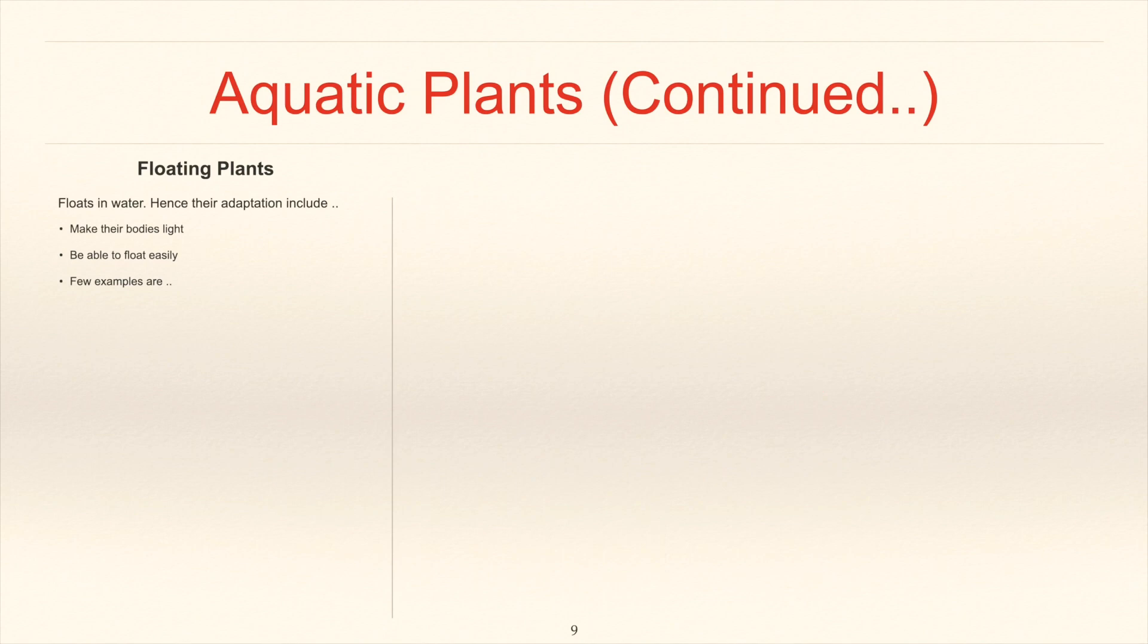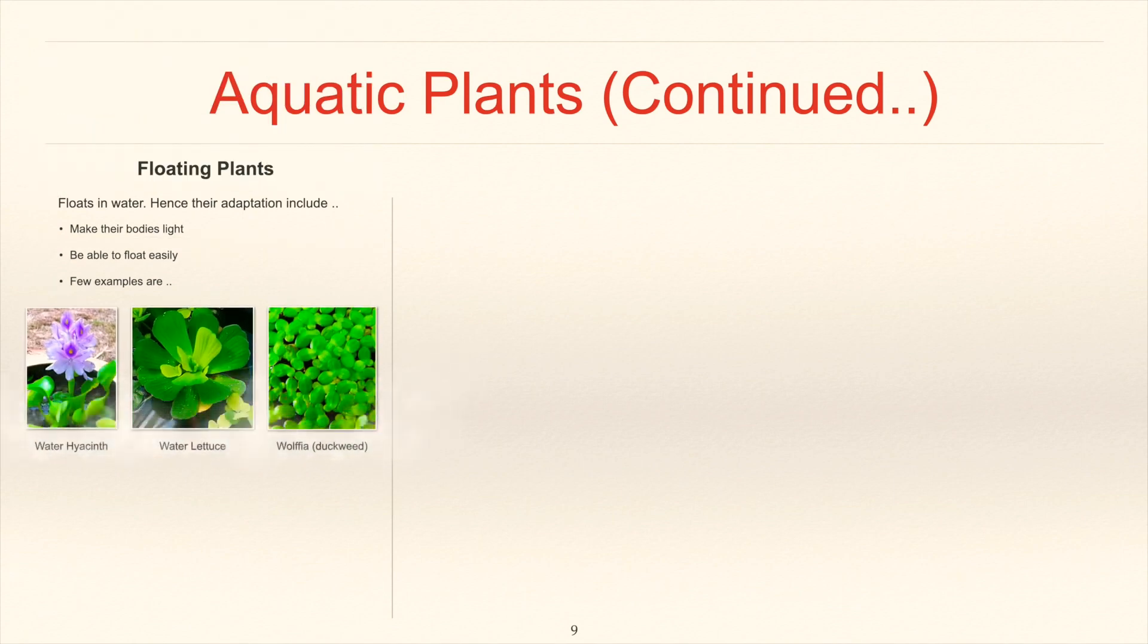Floating plants are the plants that float in water. Hence their adaptation include making their bodies light, be able to float easily on the water. Few examples of the floating plants are water hyacinth, water lettuce, and wolffia which is also known as duckweed.